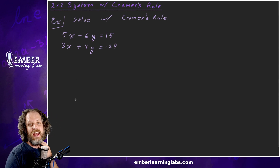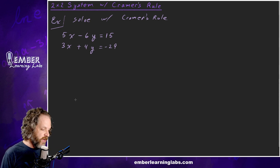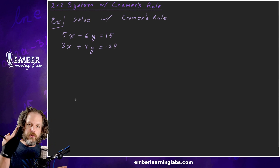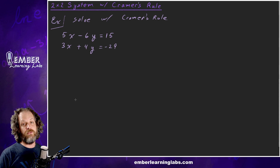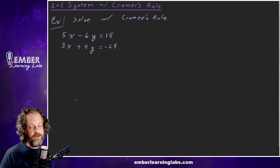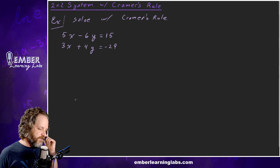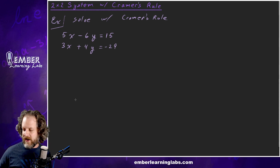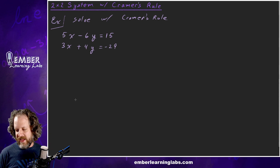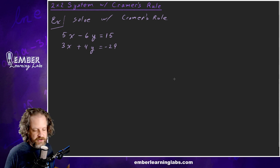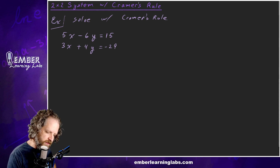We're going to do a 2x2 example and then a 3x3 example and then we'll be finished. In order to do Cramer's Rule, we have to find three different determinants for a 2x2 — four for a 3x3. The first one we're going to find is what we call C or D, the coefficient matrix.